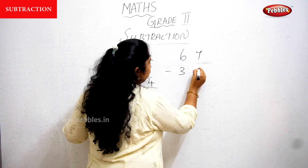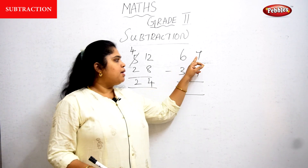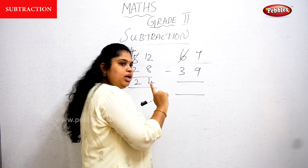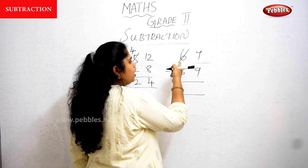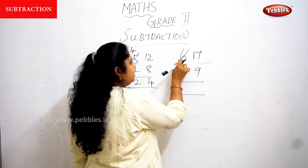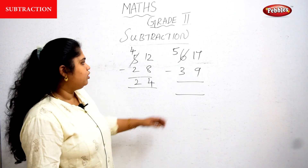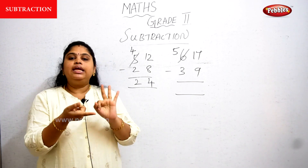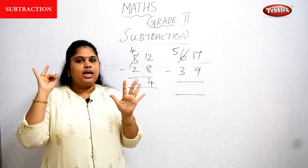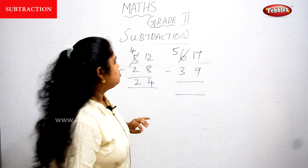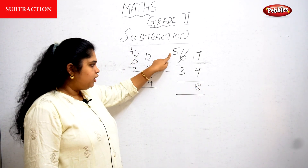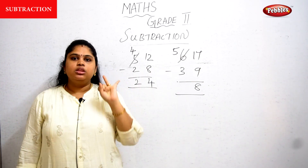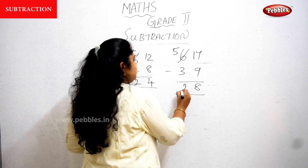Last example: 67 minus 39. Can I perform backward counting from 7 to 9? No. So I borrow 1 from the 6, making 7 become 17 and 6 become 5. From 17 to 9: 16, 15, 14, 13, 12, 11, 10, 9 — 8 fingers left. So 8 in the ones. Then from 5 to 3 in the tens: 4, 3 — 2 fingers left. So the answer is 28.